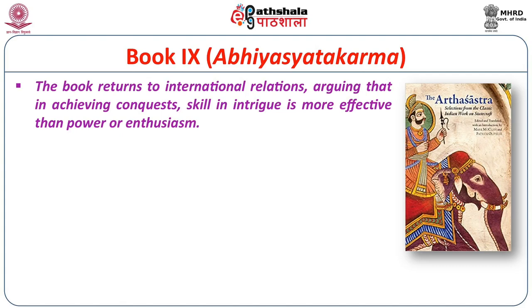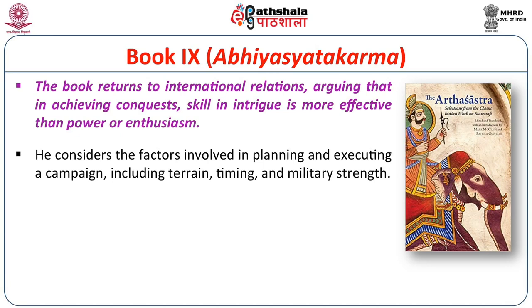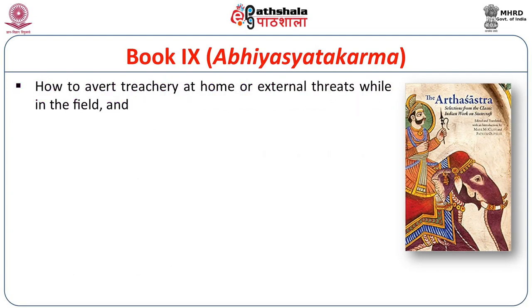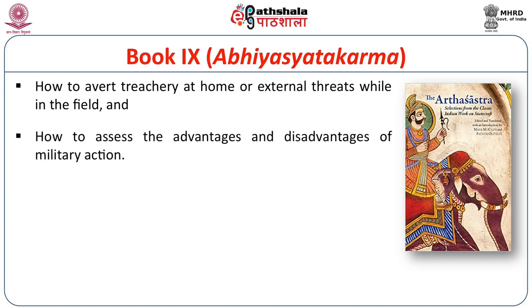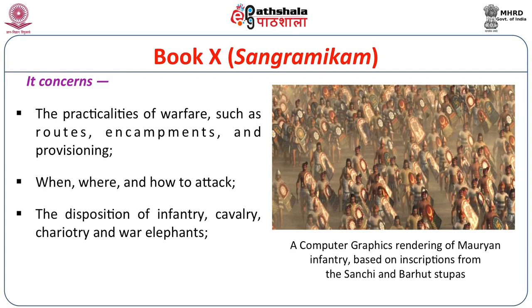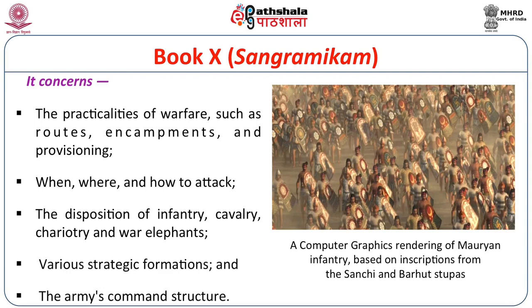Book 9 returns to international relations, arguing that in achieving conquest, skill in intrigue is more effective than power or enthusiasm. It considers factors involved in planning and executing a campaign, including terrain, timing, and military strength. Kautilya discusses the desirable size and composition of the army, its equipment and training, how to avoid treachery at home or external threats while in the field, and how to assess the advantages and disadvantages of military action. Book 10, entitled Sanggramikam, concerns the practicalities of warfare, such as routes, encampments, and provisioning, when, where, and how to attack, the disposition of infantry, cavalry, chariotry, and war elephants, various strategic formations, and the army's command structure.